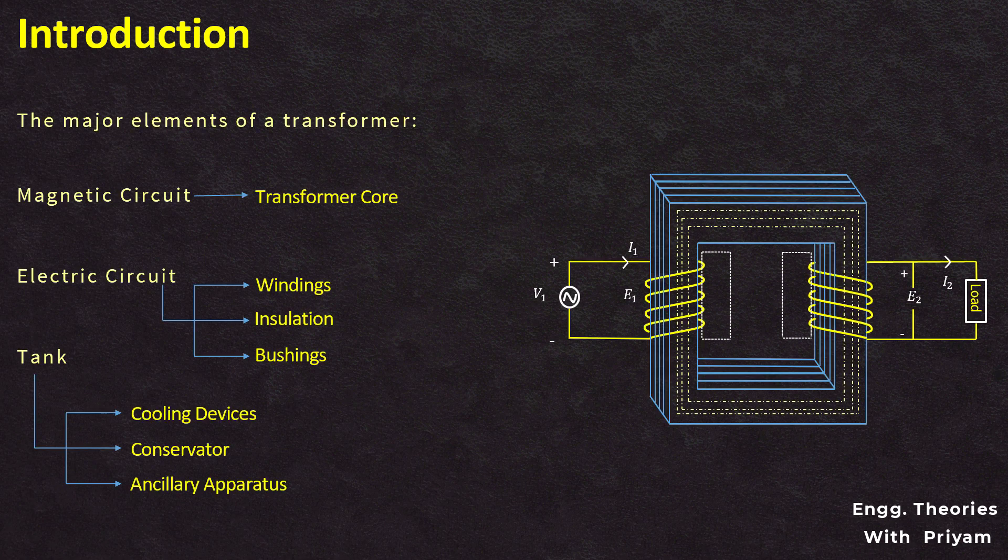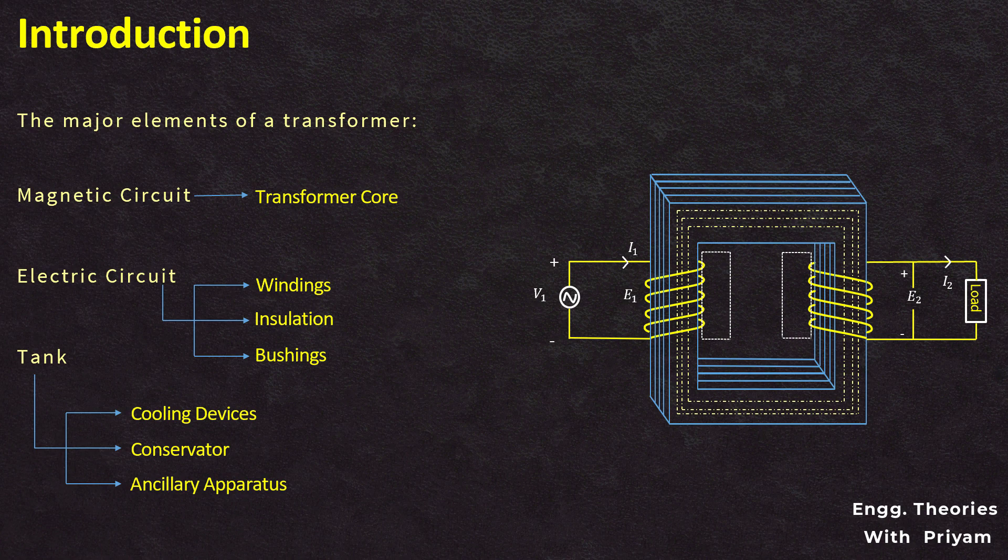In this lecture on transformers, we are going to discuss transformer windings. According to the previous lecture, principal components of a transformer were classified as magnetic circuit, electric circuit, and the tank. The electric circuit of the transformer is mainly comprised of windings, insulation, and bushings.